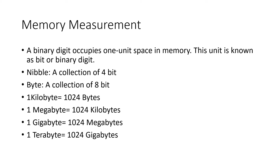A collection of 4 bits is called a nibble. A collection of 8 bits is called a byte. A collection of 1024 bytes is called 1 kilobyte. A collection of 1024 kilobytes is called a megabyte. 1024 megabytes is called a gigabyte. 1024 gigabytes is called a terabyte. Generally up to terabyte we use memory space, but right now petabyte is also available.